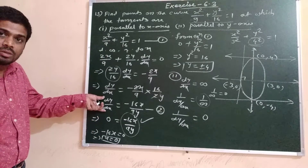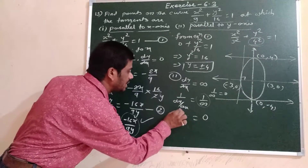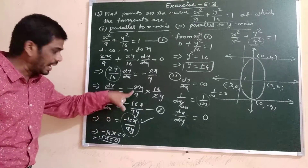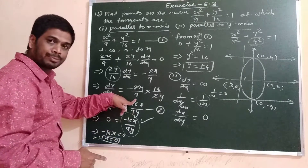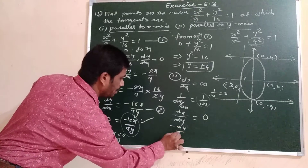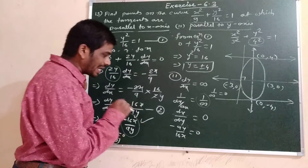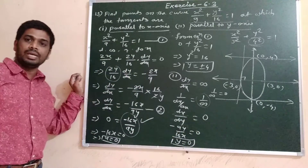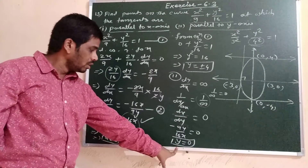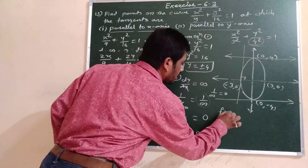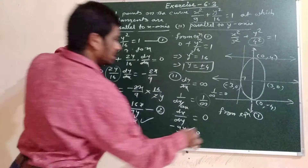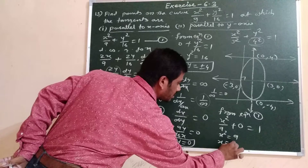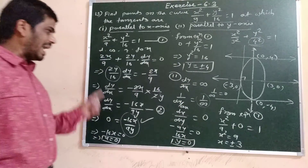Since dy/dx = −16x/9y, its reciprocal dx/dy = −9y/16x. Setting this equal to 0: −9y/16x = 0, so y = 0. Substituting y = 0 into equation 1: x²/9 = 1, so x² = 9, giving x = ±3.